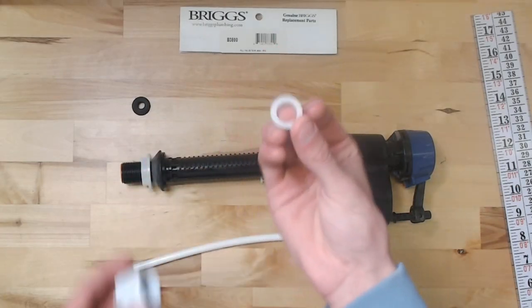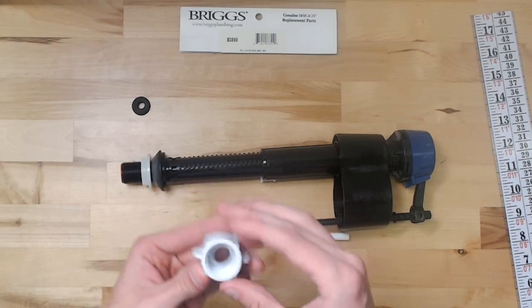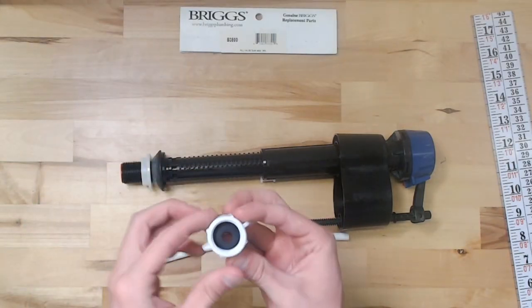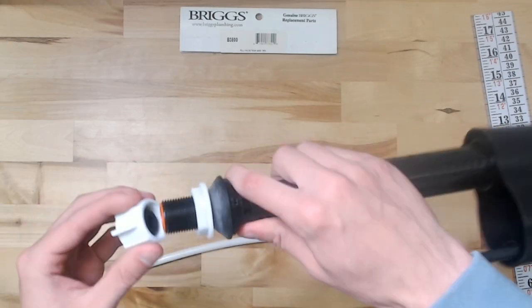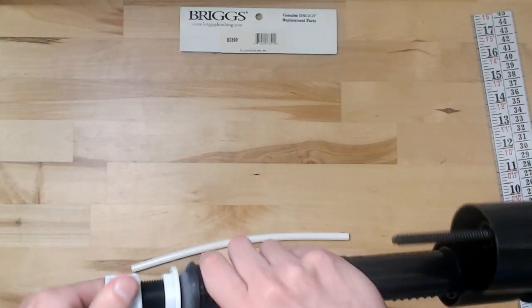And then once that goes on there, this washer here will go faced like this into the supply line nut. You can also do it this way, put that in there like that, and then this is just tightened down onto the fill valve.